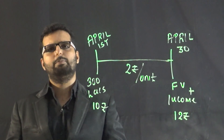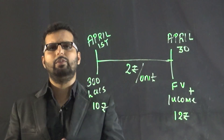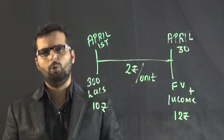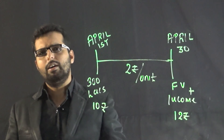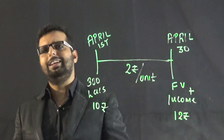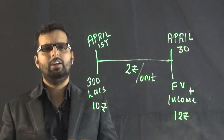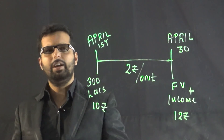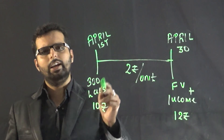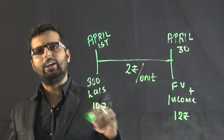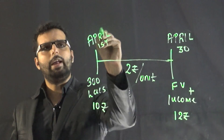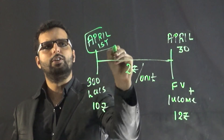I would like to explain it with very simple numbers which are given on the board. As per the concept of dividend equalization, let us say there is a company which is already having 300 lakh units outstanding on April 1st.